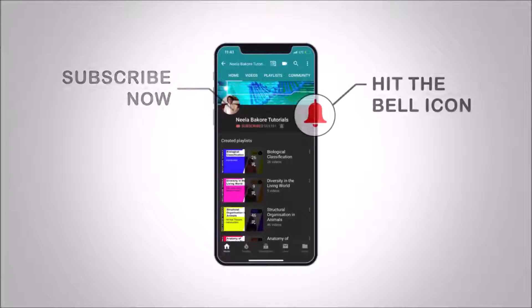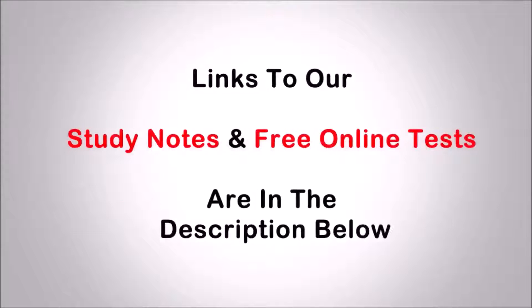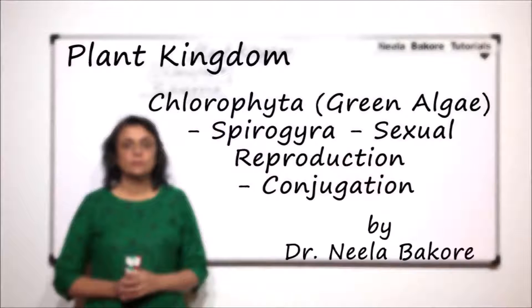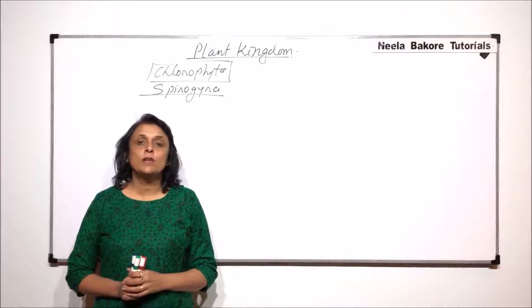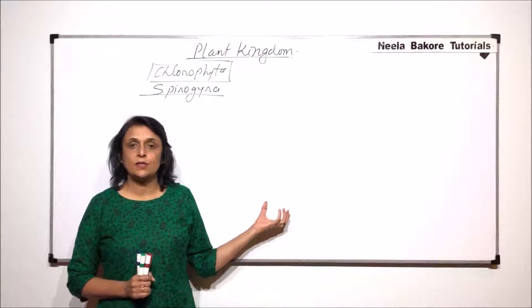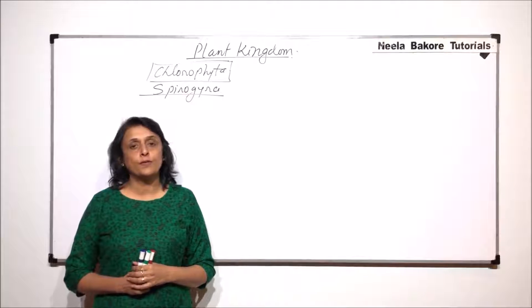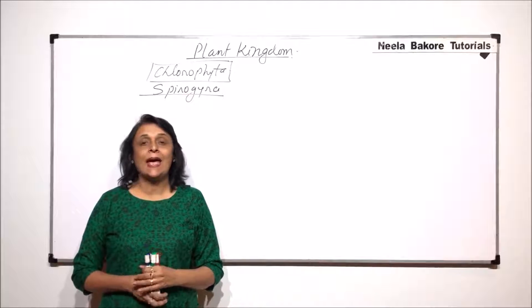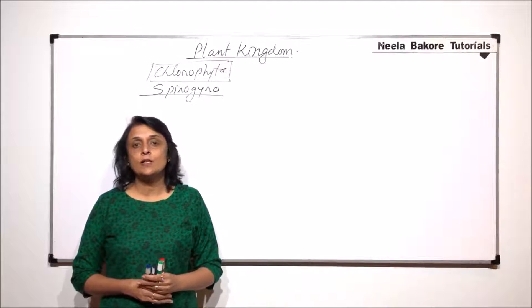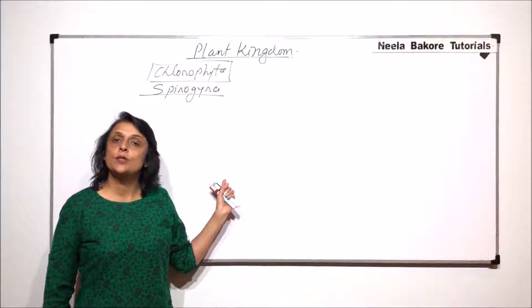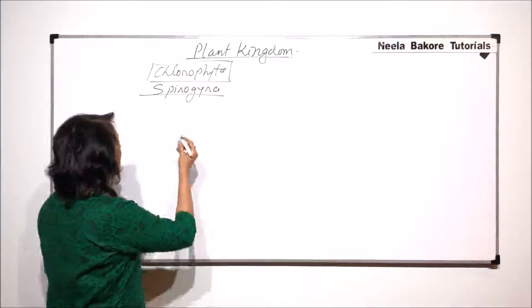Hit that subscribe button and bell icon so you never miss an update from Neela Bakore Tutorials. In the previous video, we talked about the morphological part — the structure of spirogyra and its cell — and we also talked about the asexual mode of reproduction, which is not a common method, and the vegetative one, that is by fragmentation. The main method of reproduction in spirogyra is sexual, and that is by conjugation.